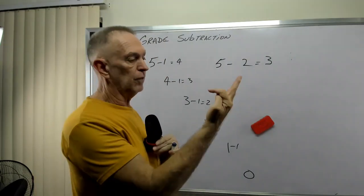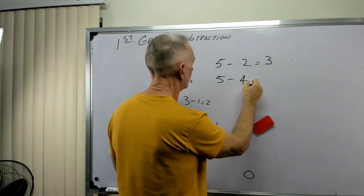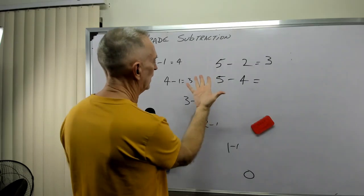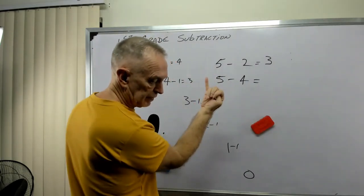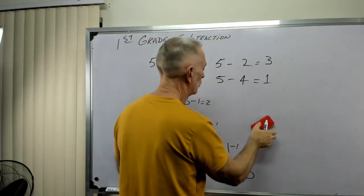So five minus four. Well, five minus one, two, three, four. That left me just the one. So five minus four is one.